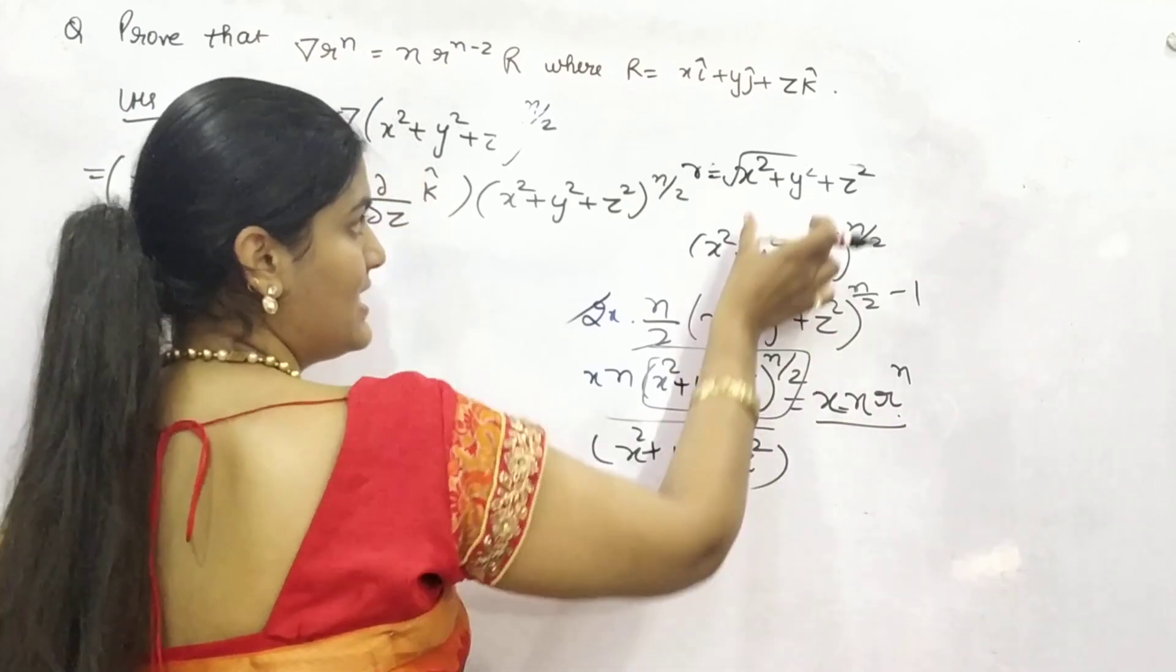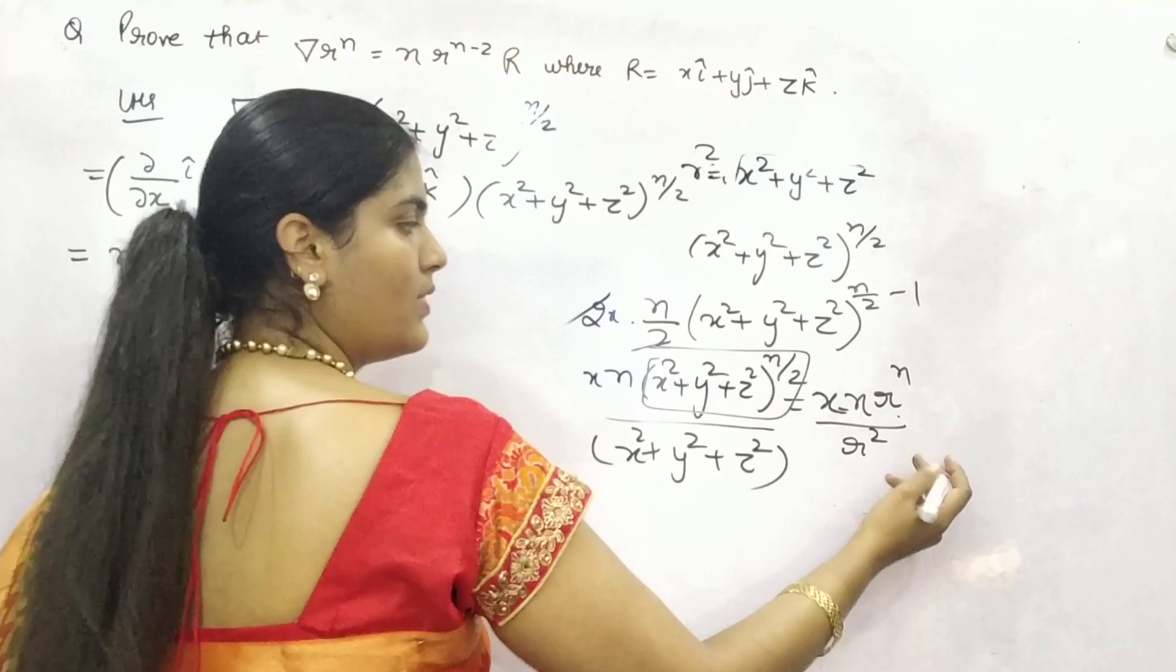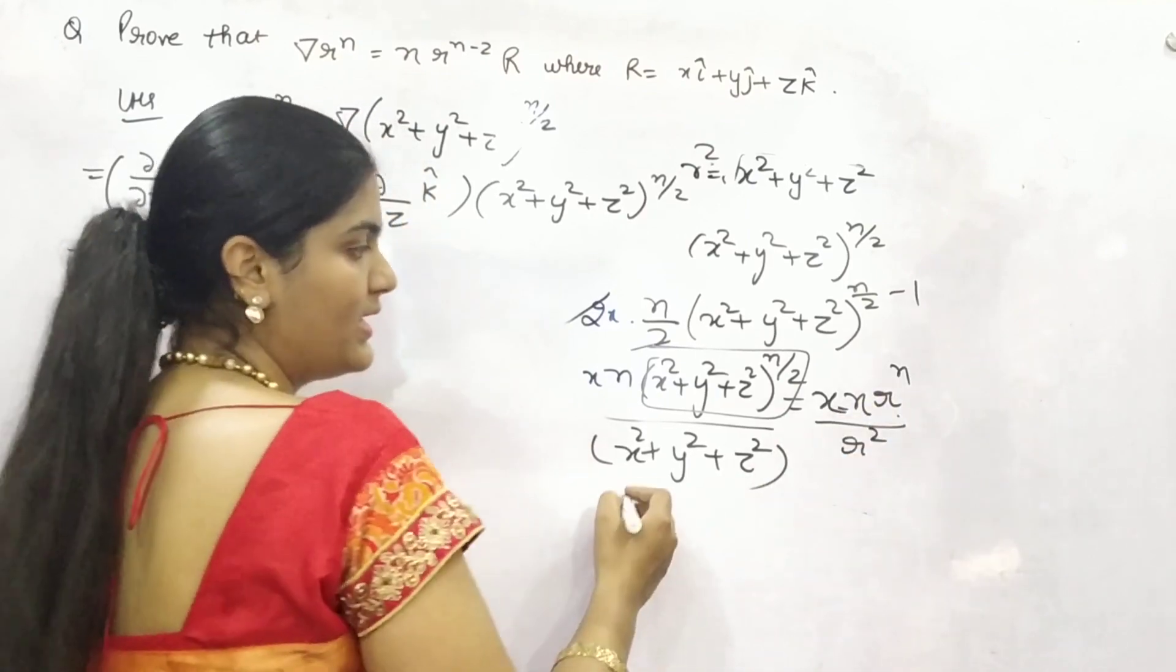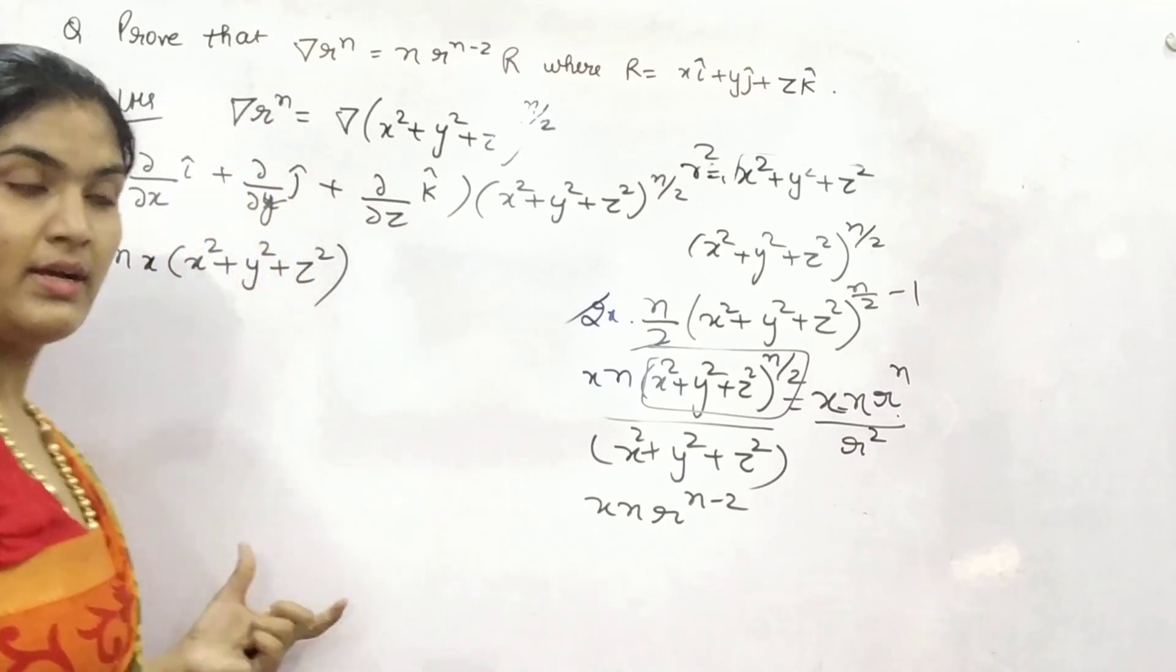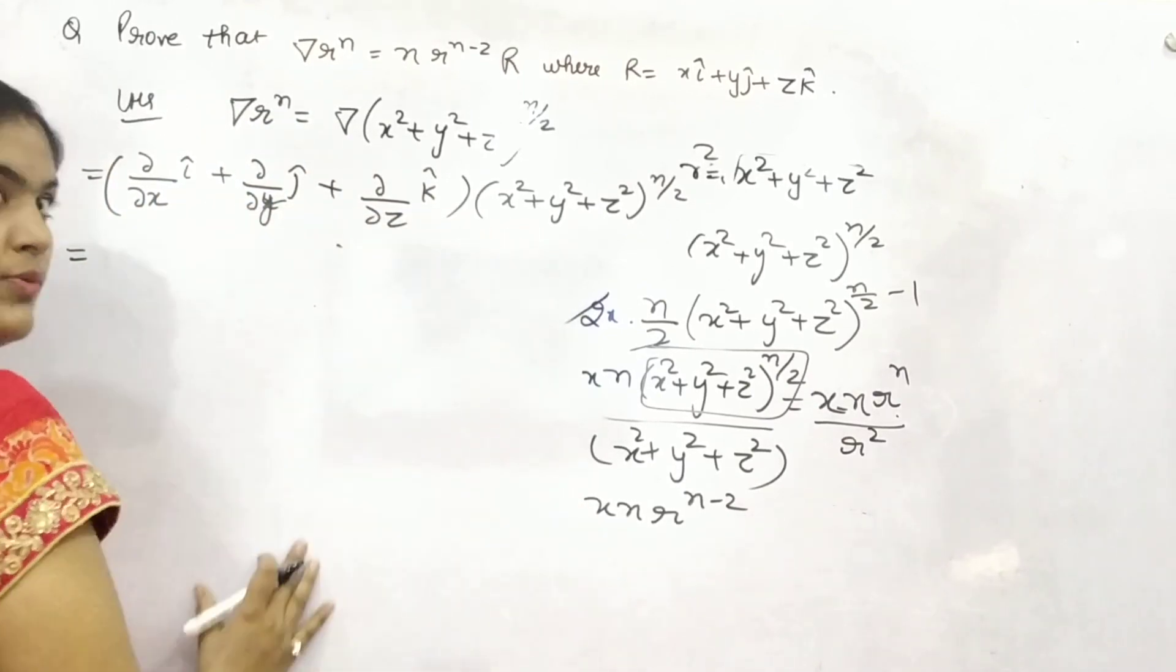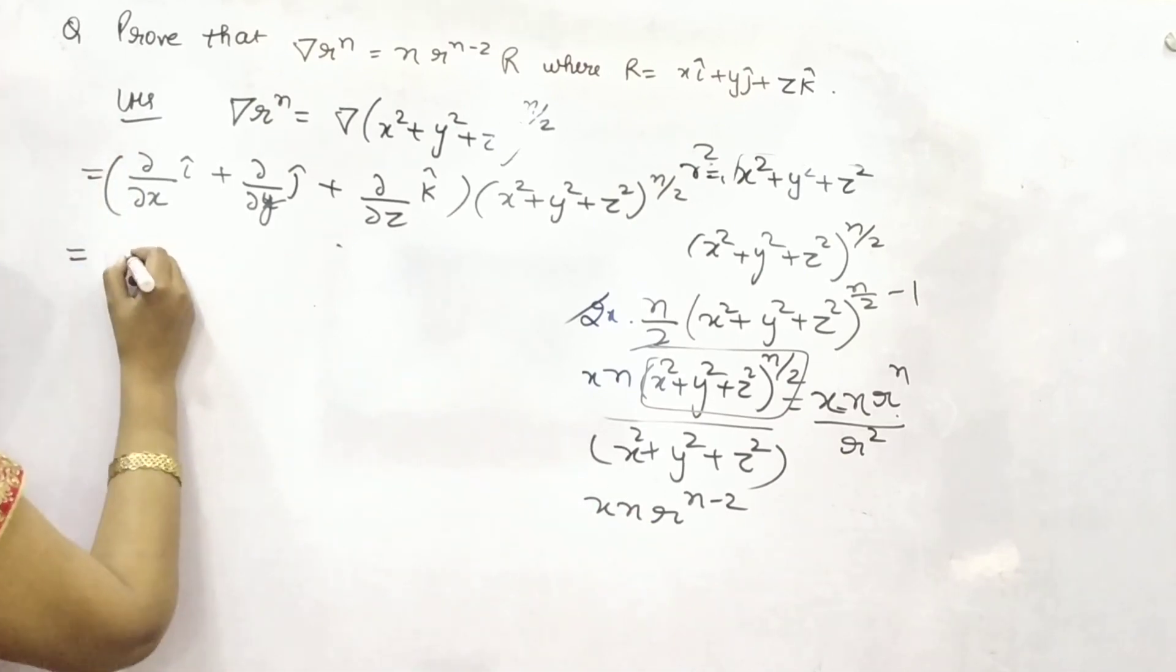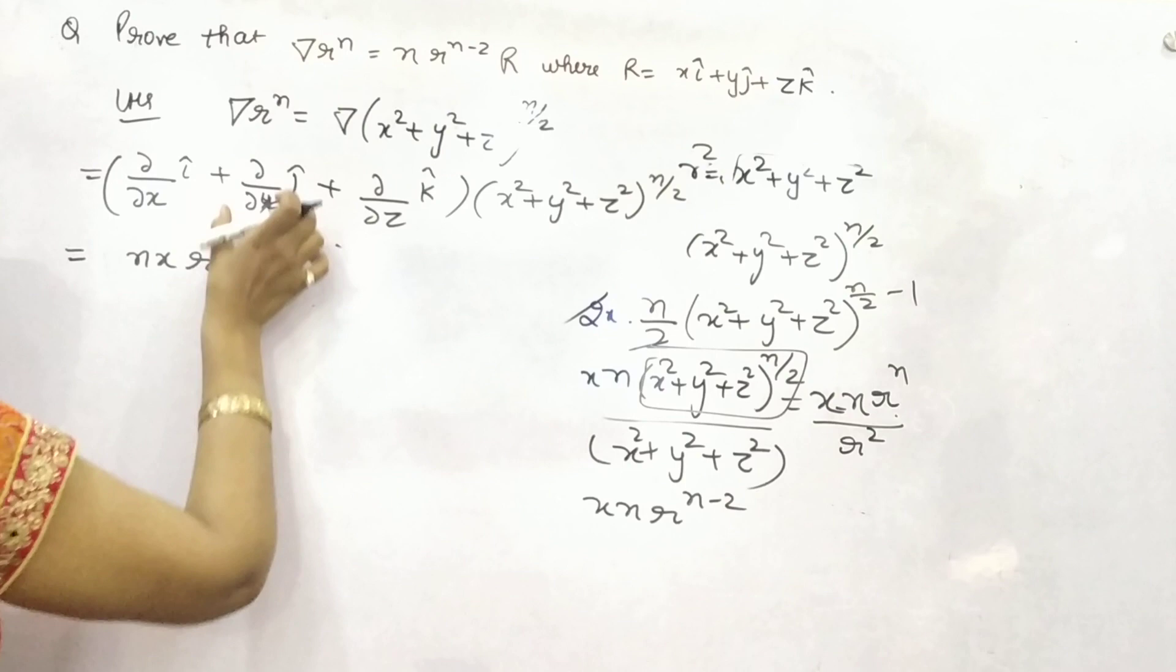And, you can see here, this is your R square. Base C power minus, so x N, R raised to power N minus 2. Correct? So, I am writing it down. With respect to x, it will be Nx, R raised to power N minus 2.